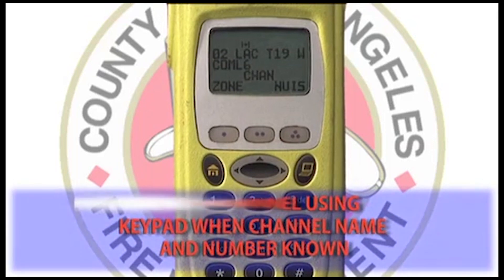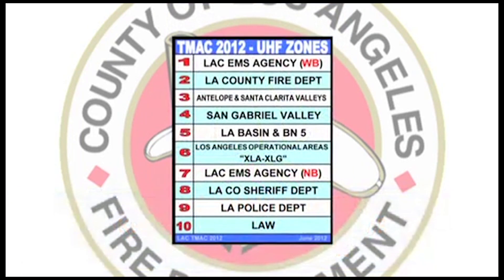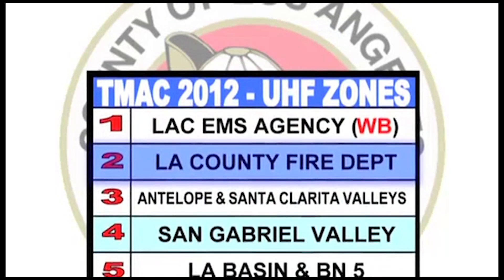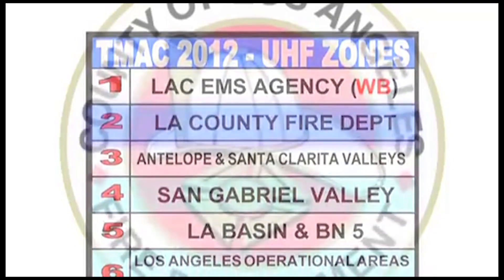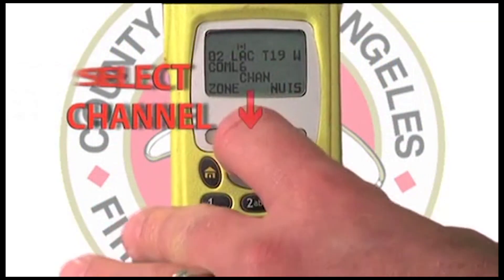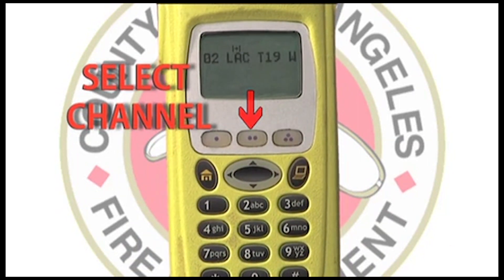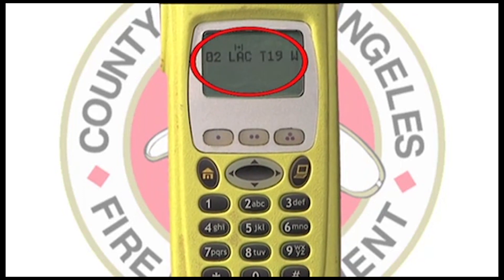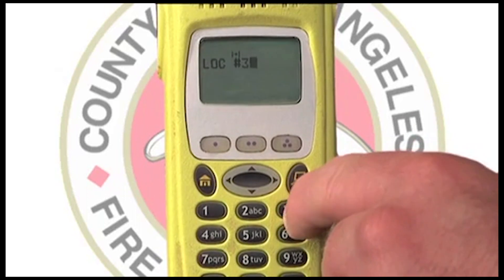One way is using the numbered keypad. To do this requires you to know the channel name and where it's located in the zone. You can find the channel you're looking for using your TMac guide. Now select channel in the LCD using the corresponding soft key. Once selected, the channel name will blink. Now enter the channel number using the keypad. Press home to select the channel.